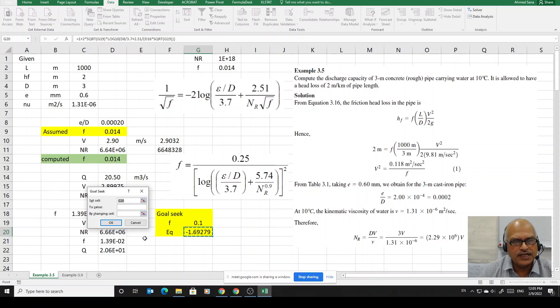Goal seek function says that set cell, this cell, we want to make it to 0 because this is the left hand side of the equation where the right hand side is 0. It's supposed to be 0. We want to make this equation to a value of 0. And by changing what should we change? The friction factor, because friction factor is actually controlling the value. All the other values are constant. Only this value is kind of unknown to us. By changing this value, by changing G19, we have to make this equation equal to 0. And we just say OK.